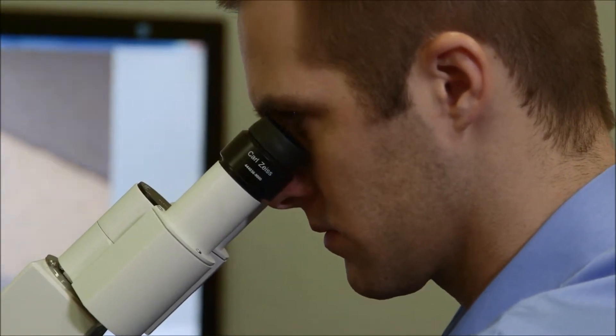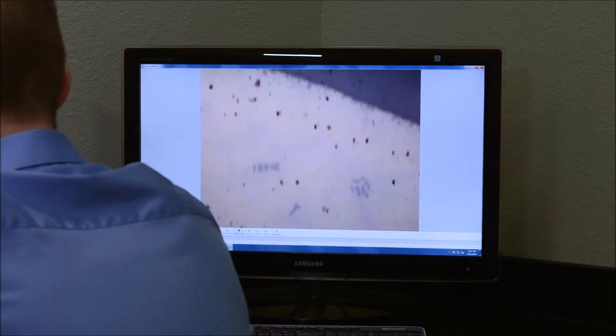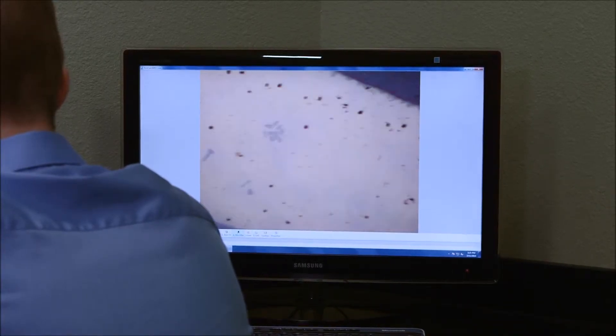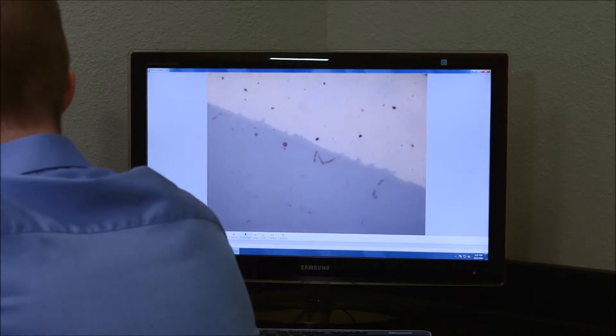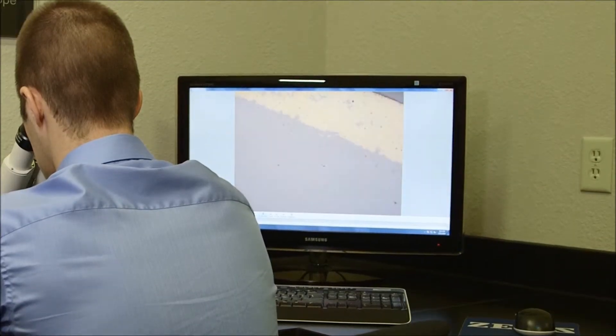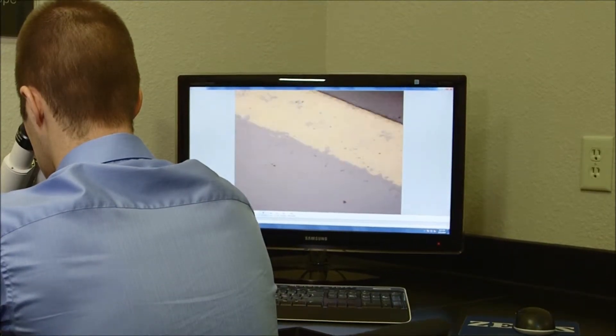And once we are analyzing this microstructure under the scope, we can also identify what is the thickness of the coating, what is the average carbide percentage or porosity percentage that might be within our coating, and we can also identify if there's any unusual phases that might be existing in the microstructure.